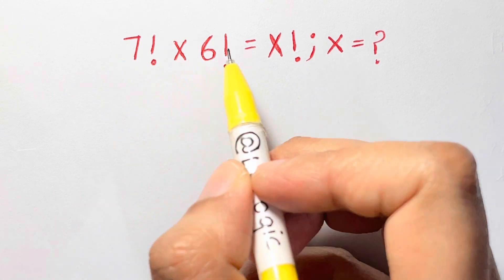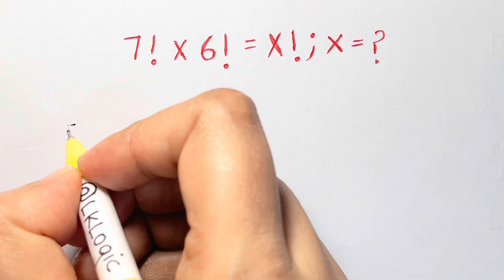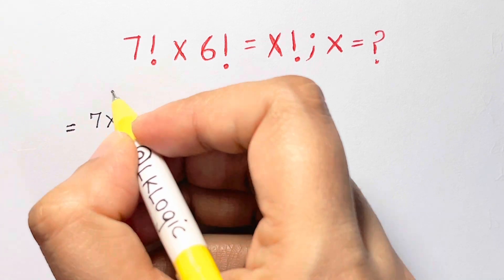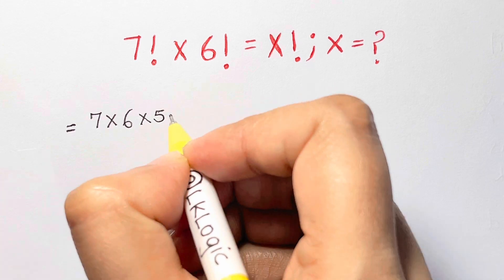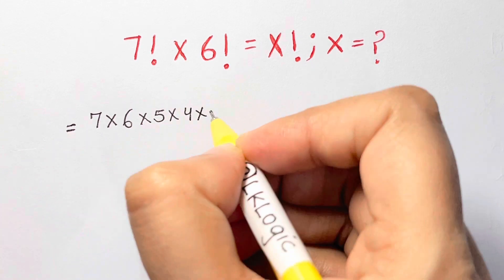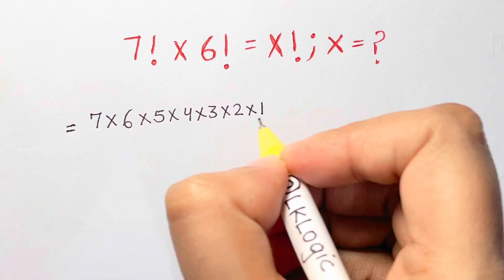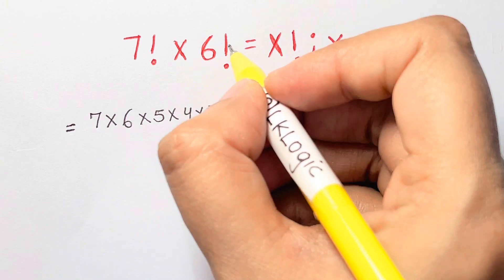Below 7 till 1. So here I have 7 factorial. Let me write down what 7 factorial is. You start with 7 and just multiply, reduce one digit and write it down: 6, then 5, then 4 times 3 times 2 times 1. Till you reach 1, you're going to multiply all the numbers. Then times 6 factorial.